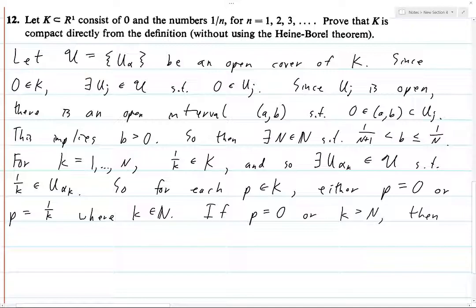so if P equals 0, or if K is greater than capital N, then in both of these cases, P is contained in Uj.